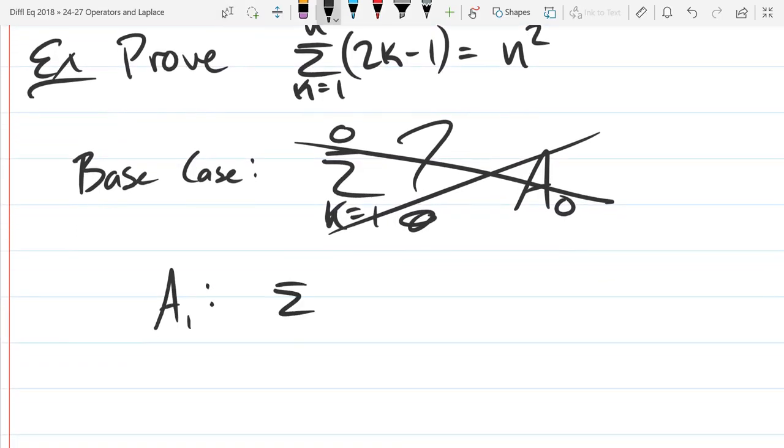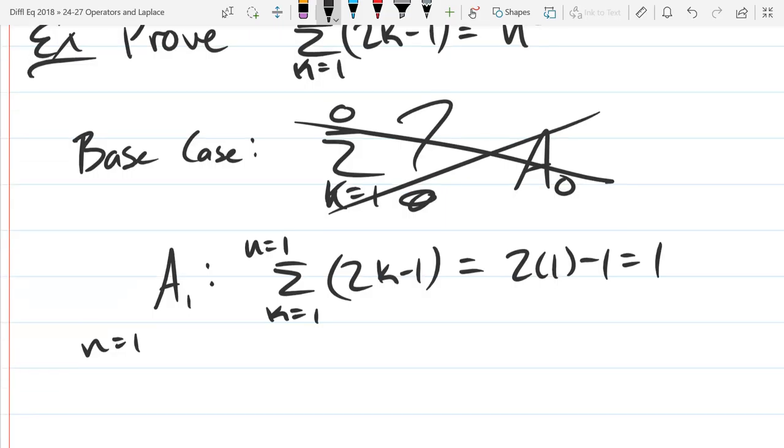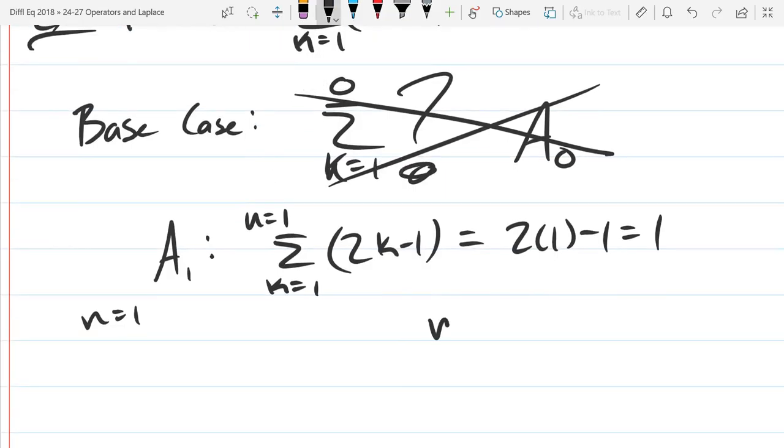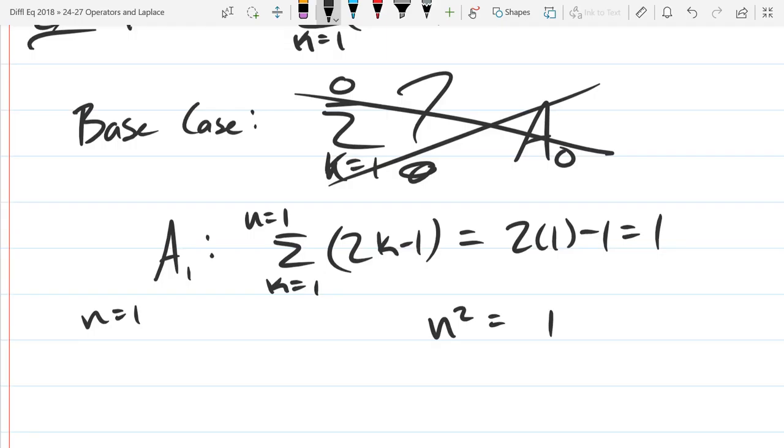a_1, summation k equals 1 to 1. Remember, 1 is the n value. I want to add up terms from k equals 1 and stop when k equals 1. There's exactly one term in this sum. It's 2 times 1 minus 1, which is 1. Easy to compute. Now we have n squared, which is our n is 1. 1 squared, which is 1. So a_1 is true.